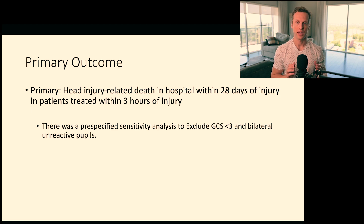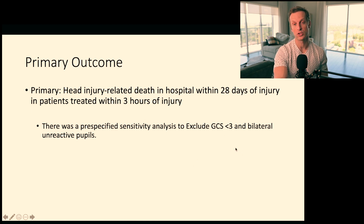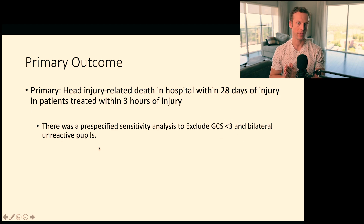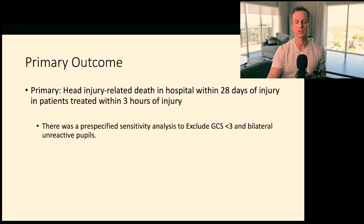They wanted to give the drug to patients with head injuries and look at death and disability at 28 days. Initially they were looking at patients treated before eight hours and those with a GCS less than three to twelve. Patients with GCS less than three and bilateral unreactive pupils were a very specific group they wanted to exclude — they had to include them initially, but it was a pre-specified sensitivity analysis to remove them later, which is very relevant to interpreting the results.